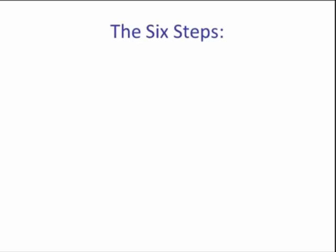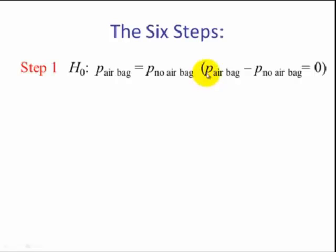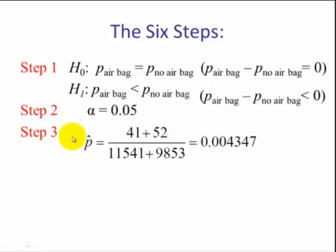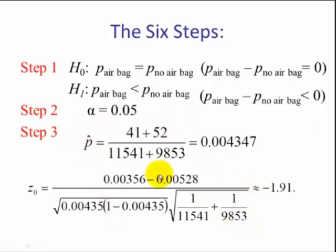So our assumptions are satisfied. We'll do our six steps. Step number one, we state the null and the alternative. Our assumption is the proportions are equal. The proportion of airbags equals the proportion of no airbags. And this is the same thing as if we were to write the proportion of airbags minus the proportion without airbags equals zero. For the alternative, it's a left-tailed test where airbag is our first proportion. And we can also write that the proportion of airbags minus the proportion of no airbags is less than zero. Step number two, our alpha level is 0.05. Step number three, our test statistic. So here we have our pooled p-hat, and if we plug it into our formula, we see that the z is a negative 1.91. Now I'm going to show you how to use Minitab and StatCrunch to compute this.